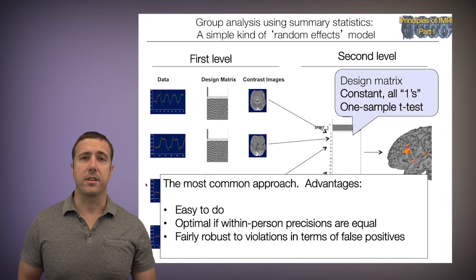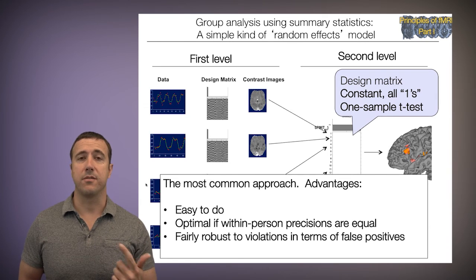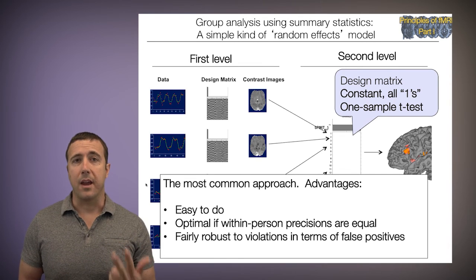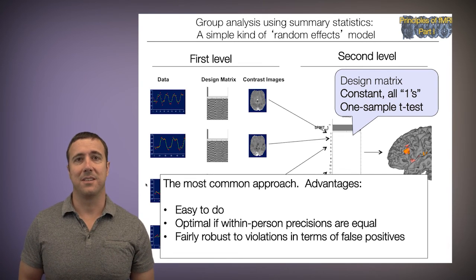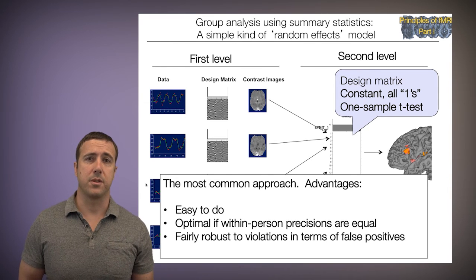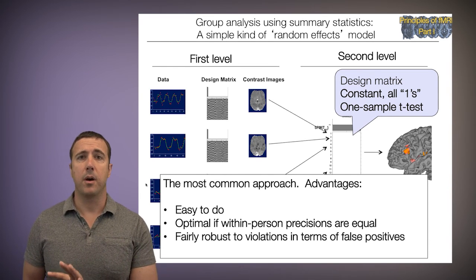It's optimal if the within-person precisions are all equal for every person. And that implies that the design matrix is identical, the sufficiency is identical. We'll talk more about that in future lectures. And the errors are all equal. It's fairly robust to violations of some of those assumptions in terms of false positives, but we can lose sensitivity in some cases.